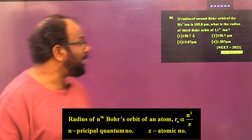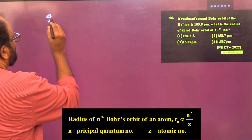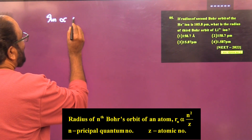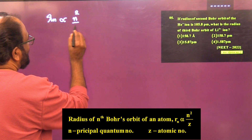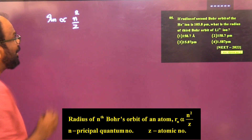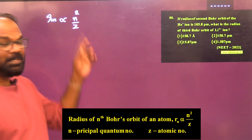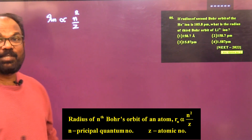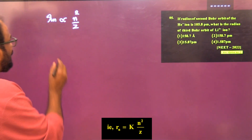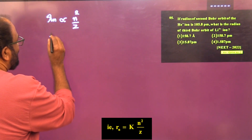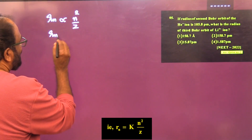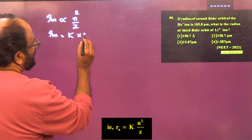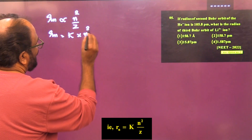We know the radius of the nth Bohr's orbit of an atom, rn, is proportional to n² divided by z, where n is the principal quantum number of the orbit and z is the atomic number of the atom. We can write rn = k × n²/z, where k is a constant.